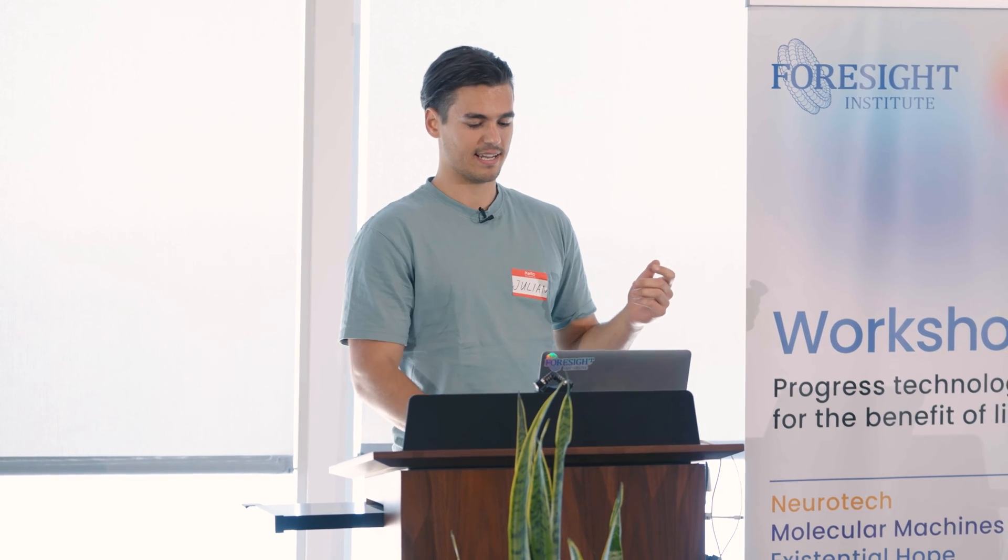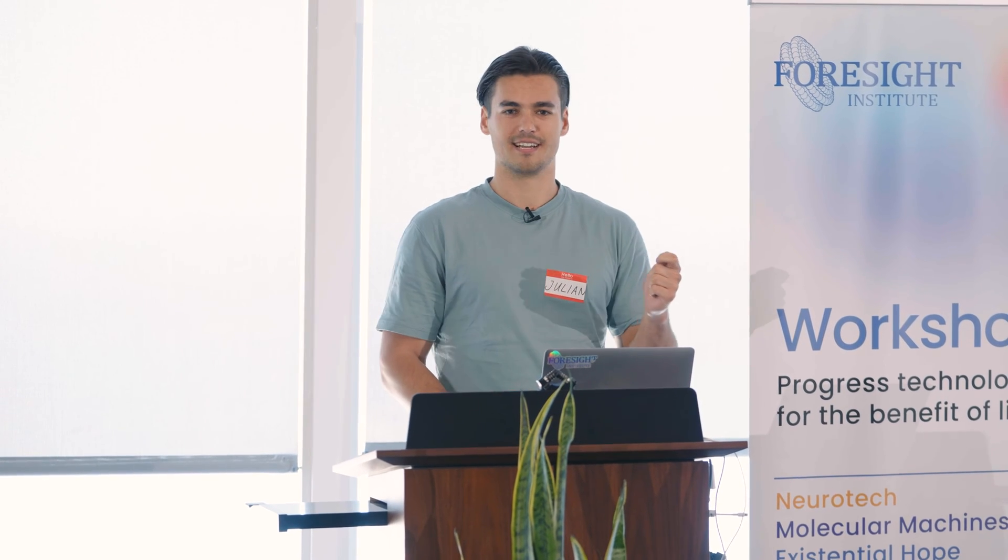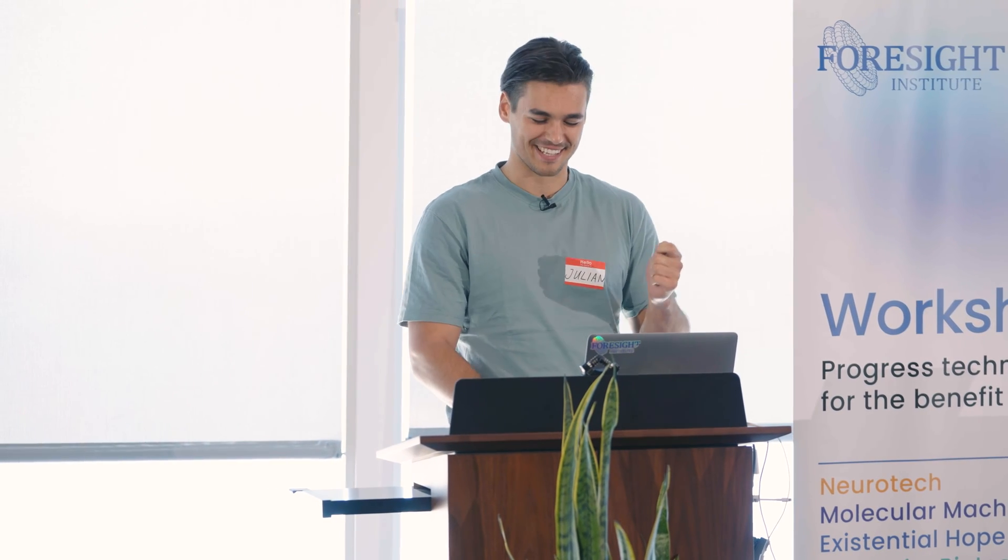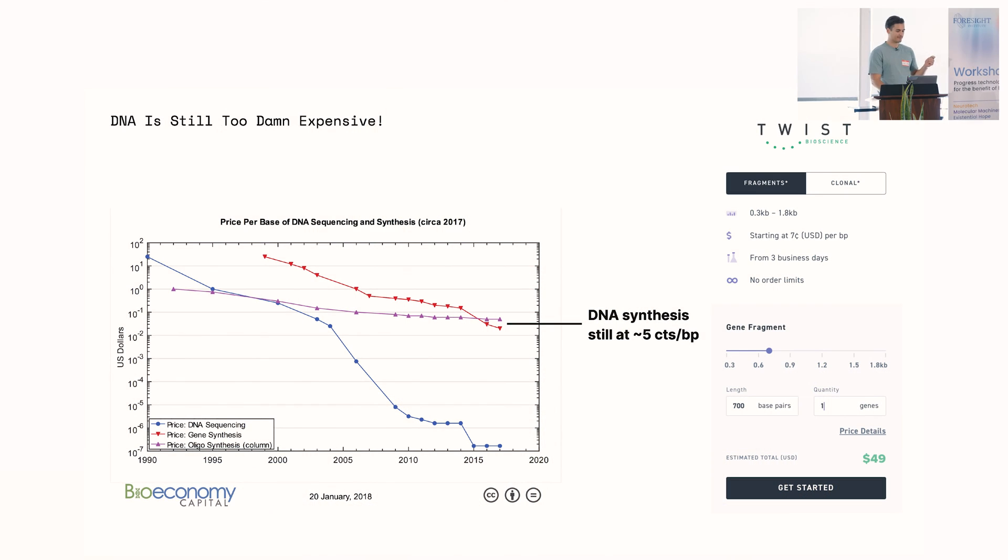And then one night in cold Switzerland last winter, we were brainstorming and we were thinking, okay, what if, so we come to a conclusion the DNA is still way too expensive, hasn't dropped much in the last five years or so. If you look at these Carlson curves, they're still stuck at something like five cents per base pair for DNA synthesis cost. So if you order this gene at Twist, you have to pay 50 bucks, although the other steps in the process are not that expensive. So what if you could make a protein without having to use DNA?